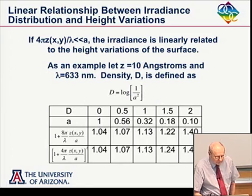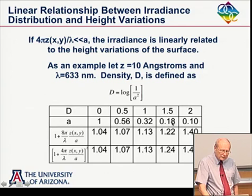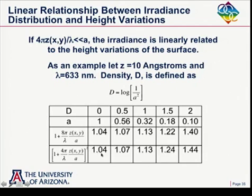I made a little table: let z be 10 angstroms and let a vary — 1, 0.56, 0.32, 0.18, and so on. This gives the irradiance change due to a height of 10 angstroms. As a gets smaller, the sensitivity becomes larger — 10 angstroms produces a larger change in irradiance. But as a gets too small, we depart from the linear relationship a little bit, because we can no longer neglect the z-squared term.